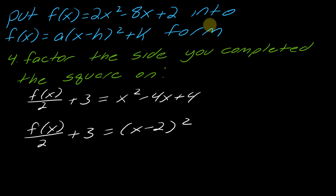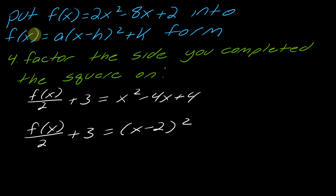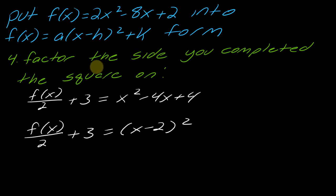Now remember: we are not trying to solve this — we are trying to put this into vertex form. So now I have to solve for f(x) again. I think of this side as a placeholder, and then eventually I clear it back up and make it look proper. So first I would subtract off the three, giving me f(x) divided by two equals x minus two squared minus three.